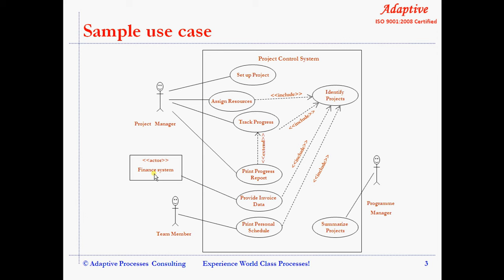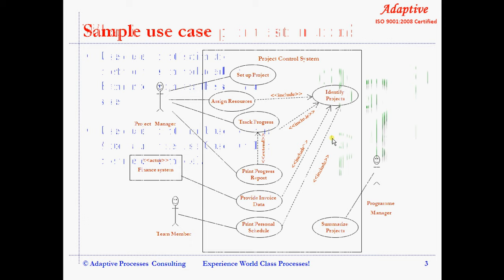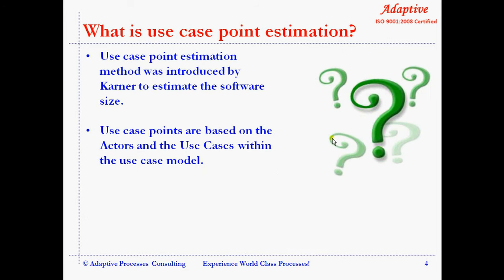Similarly, various actors perform different activities on the system, each one of which is represented by an elliptical figure. For example, 'set up project' is a use case used by the project manager. Now that we understand what a use case is, let's understand use case point estimation.